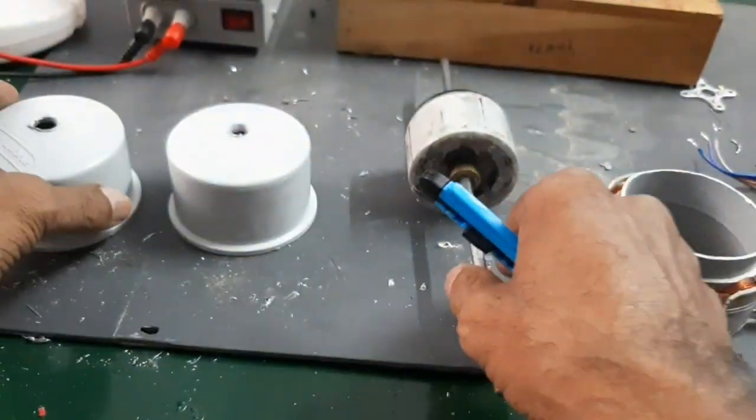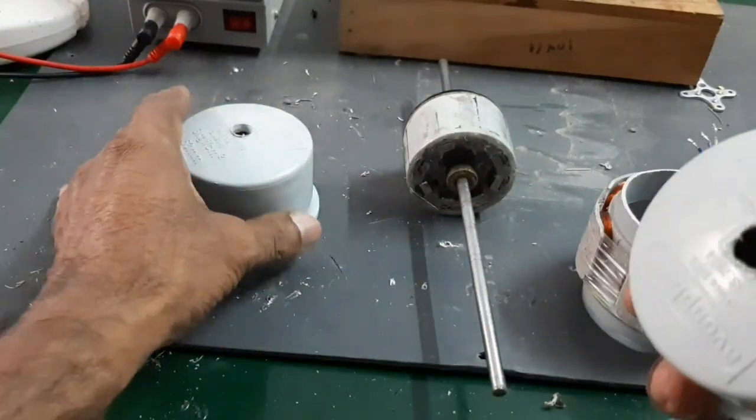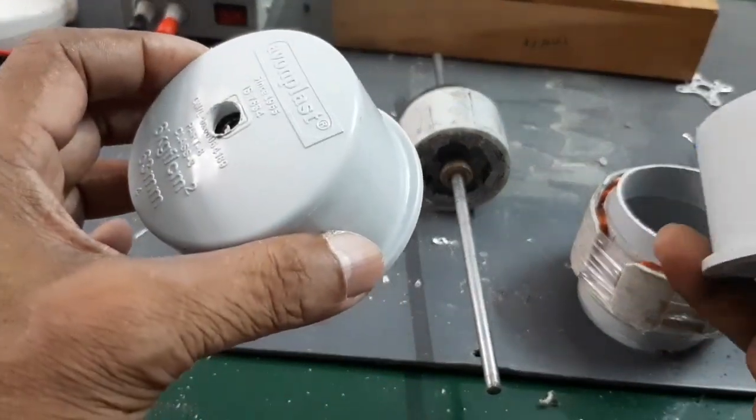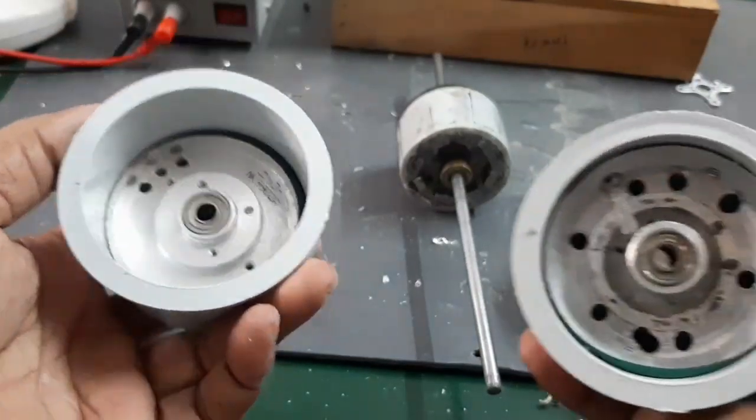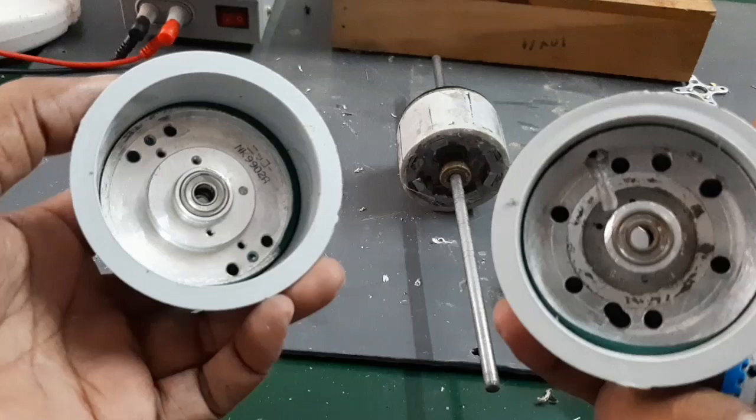And here, look at this. This is the PVC end cup for the motor end cup. Here, I am also inserting the bearing for the free rotation.